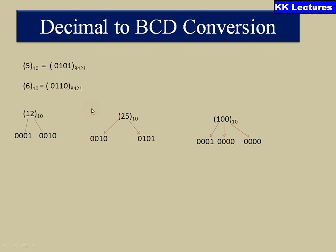Now take a two-digit number like 12 base 10. To express this in BCD, 1 is expressed as 0001 and 2 as 0010. This gives the binary coded decimal in 8-bit format for a two-digit number.